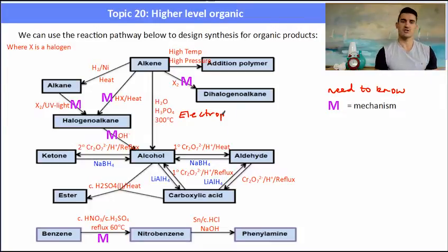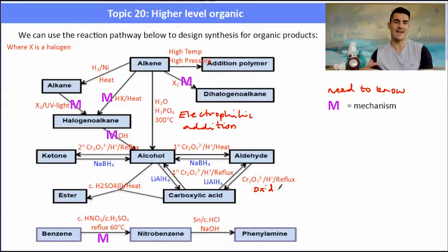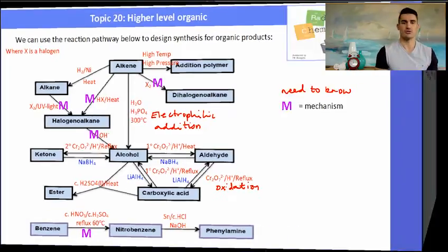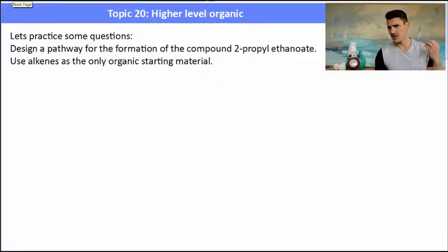One good thing to do with this type of diagram is to go through and also write what kind of reactions occur when you go from say an alkene to an alcohol. You know that's electrophilic addition. Or if you go from an aldehyde to a carboxylic acid then that's oxidation. Make sure you can reference those types of reactions because they'll also ask you to do those as well. So let's just get straight into it and practice some questions.